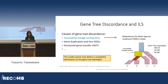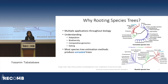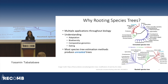Under the MSC model, the species tree defines the probability distribution on the gene tree topologies, and it can be recovered from this probability distribution. The focus of this talk is rooting species trees, as rooted species trees have multiple applications in biology — for example, they are useful for studying adaptation, diversity, and comparative genomics. But most species tree estimation methods produce unrooted trees, and many biological analyses need a rooted version. Therefore, we need additional tools that can root an unrooted species tree.